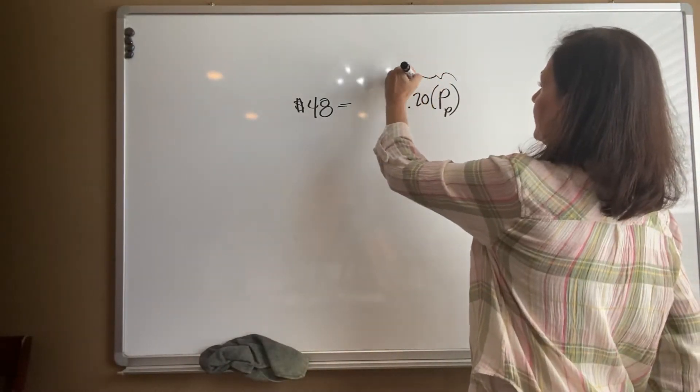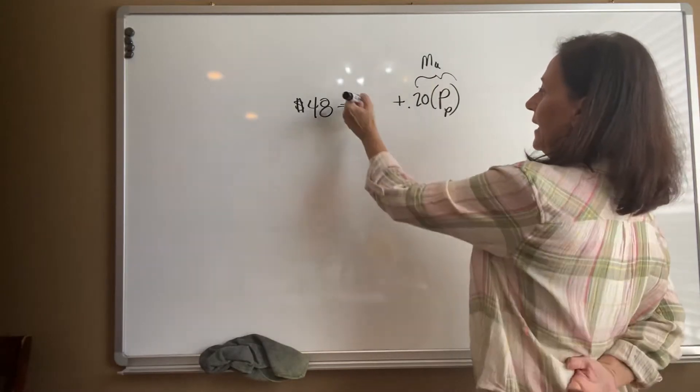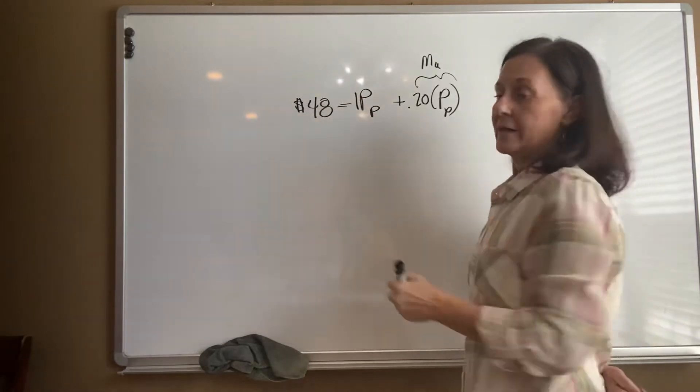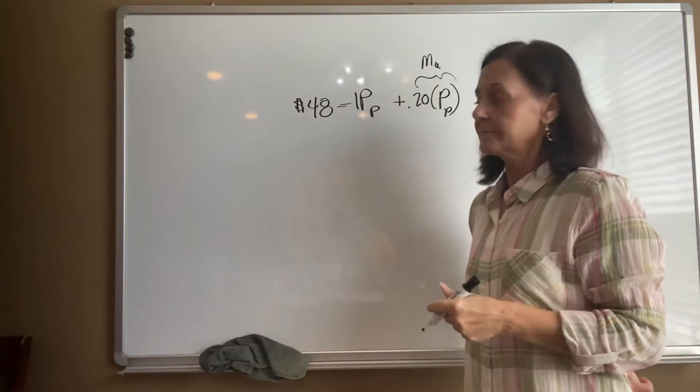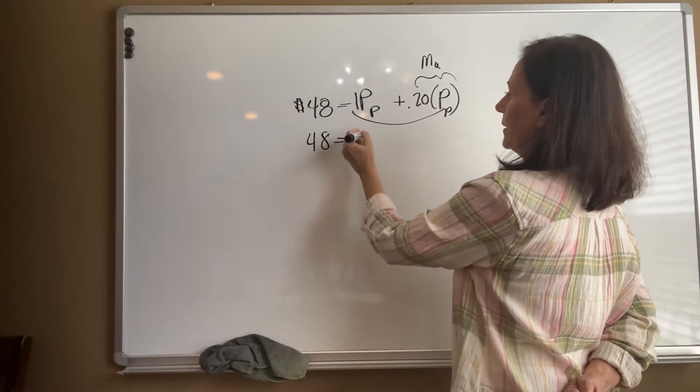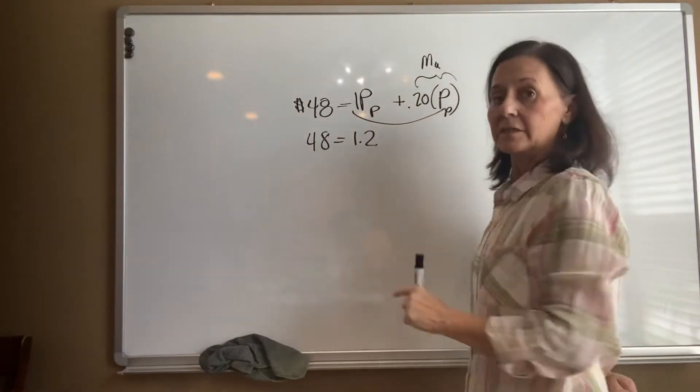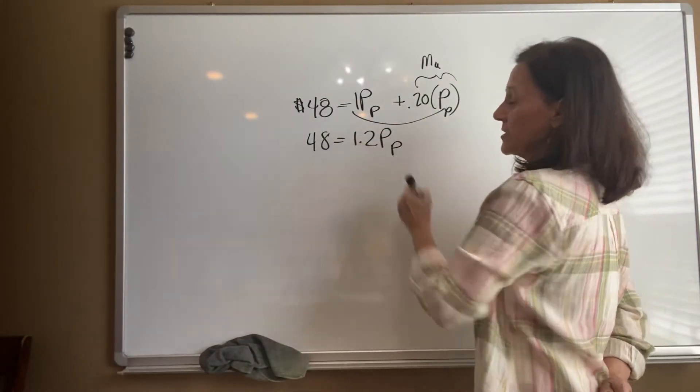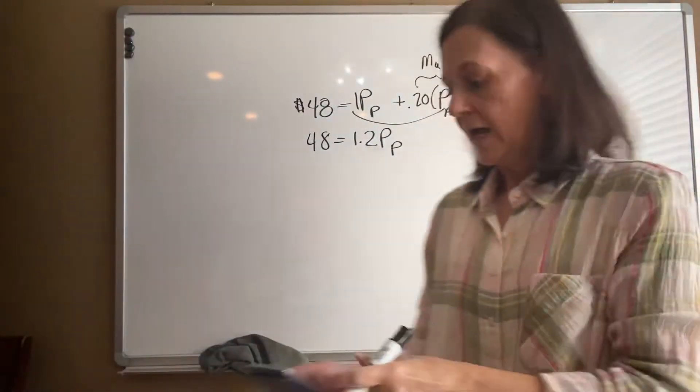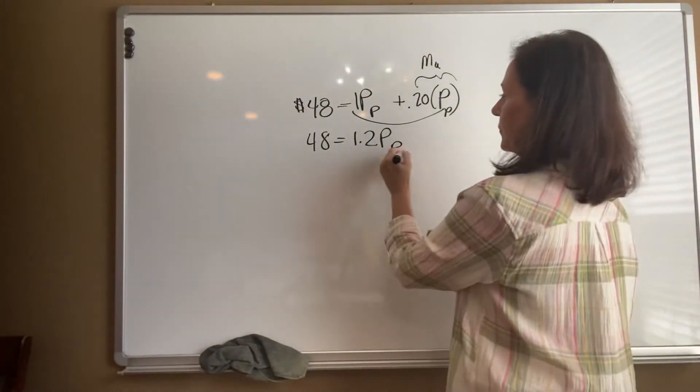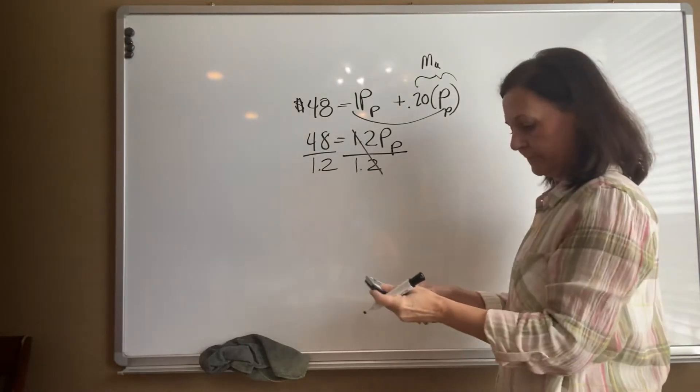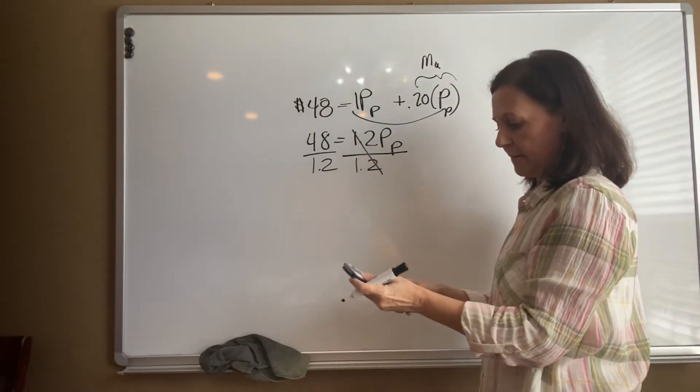So this value represents our markup and this will represent our purchase price. Well, it's really one times the purchase price, right? So when I combine my like terms, I have $48 equals 1.2—that's just one plus 0.2—times the purchase price. Then to solve for the purchase price, I divide both sides by 1.2.